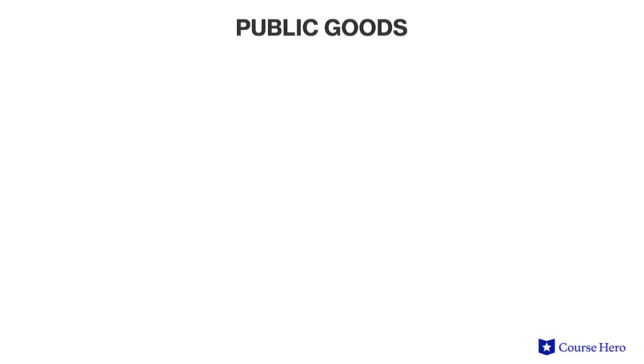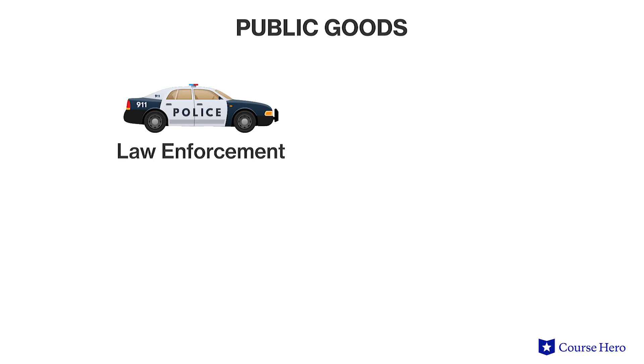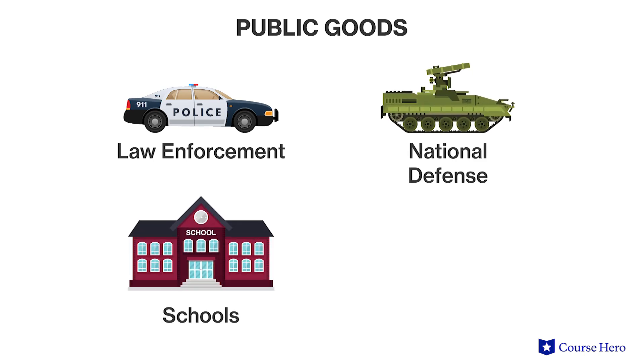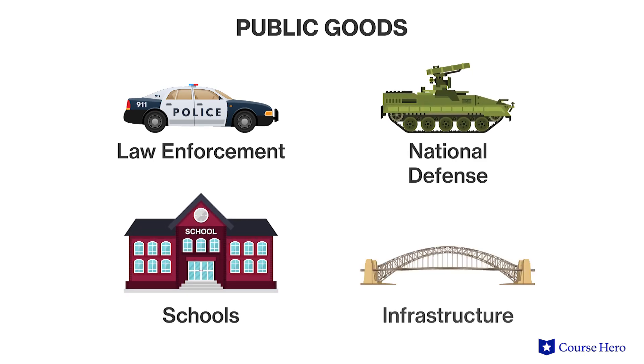Examples of public goods include law enforcement, national defense, public school systems, and roads and other infrastructure. These goods and services cause market failures because it is usually hard to make a profit from them, and therefore private firms will not want to provide them.